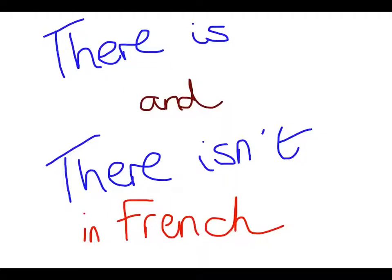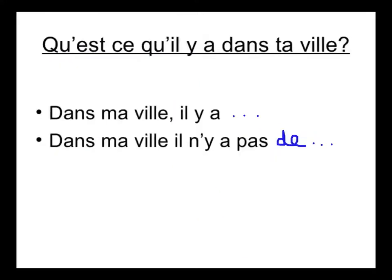In this video I'm going to explain how you can say 'there is' and 'there isn't' in French. This is a typical question from our module 4 studies: Qu'est-ce qu'il y a dans ta ville? — What is there in your town? To answer this question you might like to say some things that there are in your town and some things that there aren't in your town.